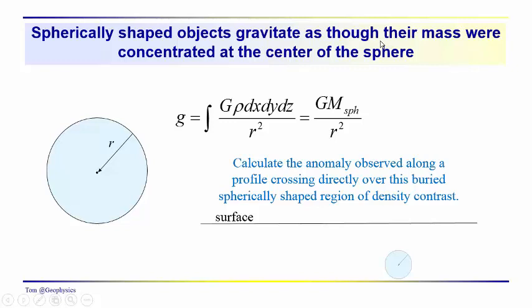So looking at a spherically shaped object, we're going to ask ourselves, if this spherically shaped object gravitates as though all of its mass is concentrated at the center of the sphere, then that makes the problem real simple. We don't have an integral anymore, we just have that G is equal to G times the mass of the sphere over the radius of the sphere squared. So we can treat the gravitational field on the surface of this sphere, anywhere on the surface of this sphere, as though all the mass were concentrated at the center. So ask yourself how you would go about computing the acceleration due to gravity along a profile that went across a buried sphere like this.